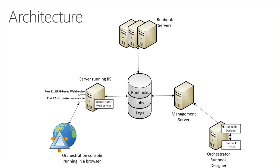One part not mentioned in the terms section was the Orchestrator web service. We have a REST-based web service configured by default on port 81, and that can be used by third-party solutions as well as the Orchestration console. The Orchestration console is a web application on port 82 by default, where you can control your runbooks and get real-time status information.